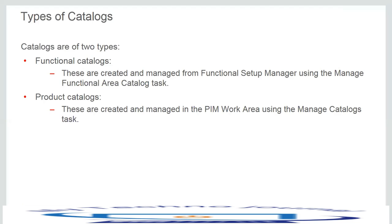We will be discussing more on functional area catalogs, which are primarily used to support other Fusion applications that require integration between the functional area catalogs and the processes within the application. For example, the purchasing functional area catalog is integrated with the procurement process to allow items assigned to categories in this catalog to support various purchasing processes. Product catalogs are used to support additional processes and integration with external applications.